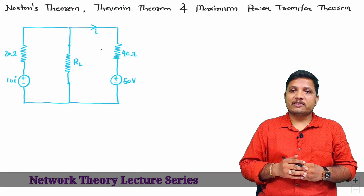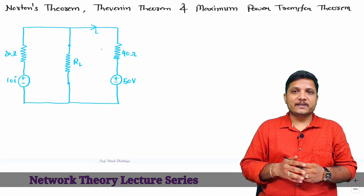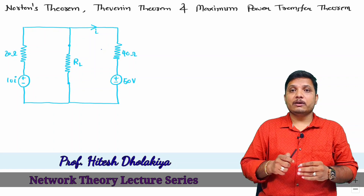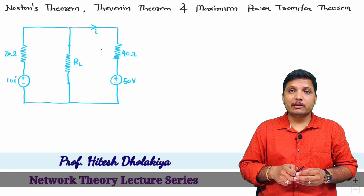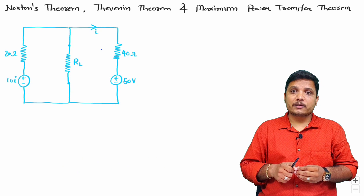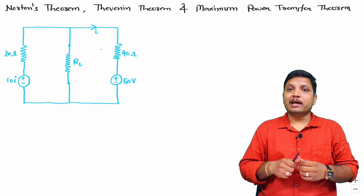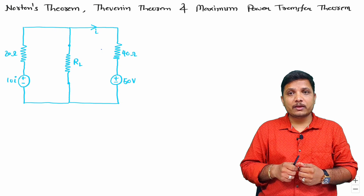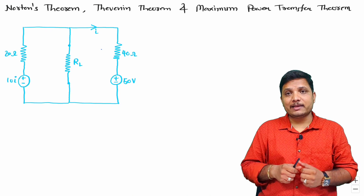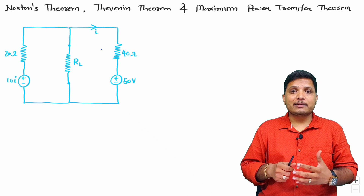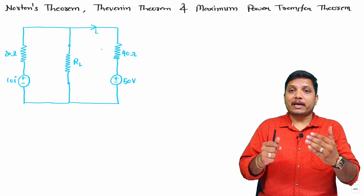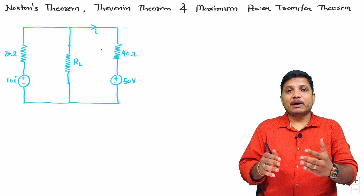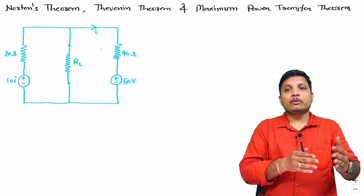Welcome to the network theory lecture series. Professor Ritesh Dolakya is going to explain one very interesting example involving a dependent source. That example will be explained by Norton's theorem, then by Thevenin's theorem, and finally we'll prove that the maximum power transfer theorem gives the same answer for both theorems.